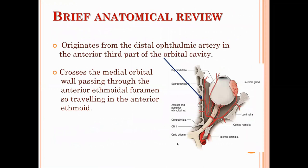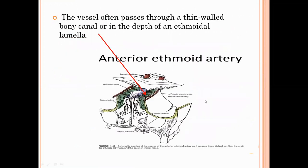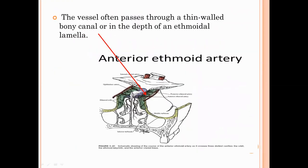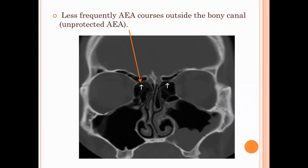Let's go to a brief anatomical review of the anterior ethmoidal artery. It is basically a branch from the distal part of the ophthalmic artery. The ophthalmic artery gives a branch to the posterior ethmoidal artery, and then the anterior part of the orbital cavity gives rise to the anterior ethmoidal artery. This artery crosses the medial orbital wall passing through the anterior ethmoidal foramen, traveling to the ethmoidal area. The vessel often passes through a thin bony canal or in the depth of the ethmoidal lamella. Less frequently, the anterior ethmoidal artery courses outside the bony canal wall, making it more vulnerable to injury in that case.